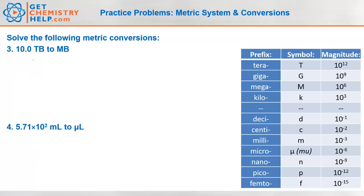So let's try a couple more. 10.0 TB to MB. If you know anything about computers, TB is terabyte, which is a way of measuring storage capacity. So if you have a 10.0 terabyte hard drive, how many megabytes will that store? Terabytes and megabytes both have bytes in common, so we're going to have to convert everything through bytes as our crossroads.